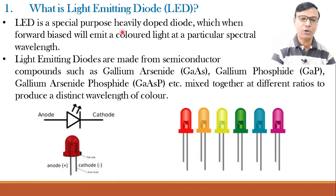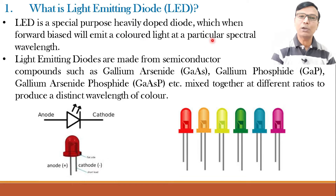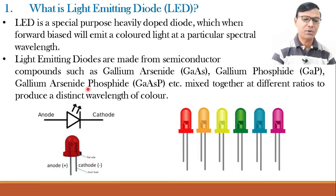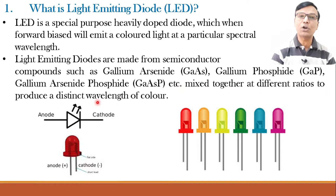It is special purpose because it is heavily doped and made up of special materials that emit light. It will emit light at a particular spectral wavelength depending on the band gap energy of the material used. Light emitting diodes are made from semiconductor compounds such as gallium arsenide, gallium phosphide, gallium arsenide phosphide, etc., mixed together at different ratios to produce a distinct wavelength of color.